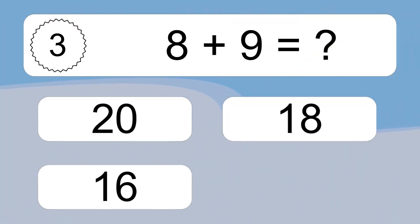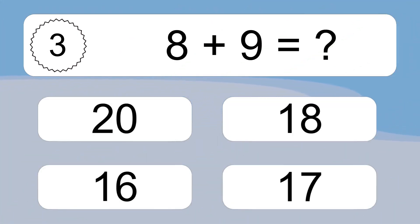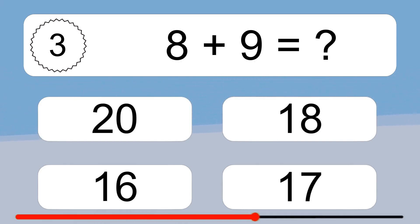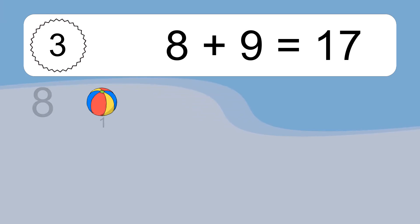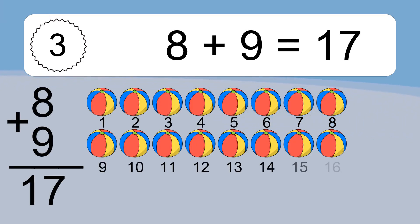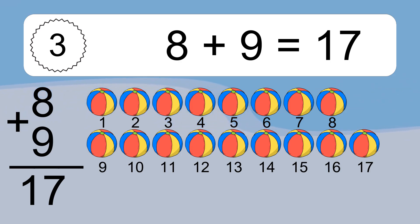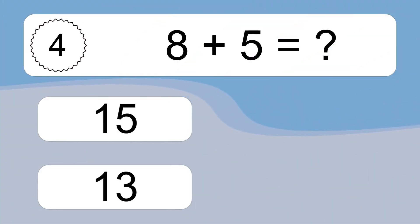Eight plus nine equals what? Eight plus nine equals seventeen. Let's count it: one, two, three, four, five, six, seven, eight, nine, ten, eleven, twelve, thirteen, fourteen, fifteen, sixteen, seventeen.